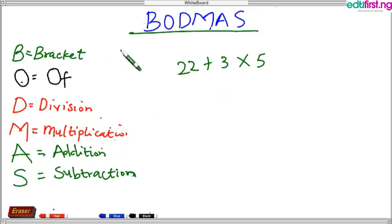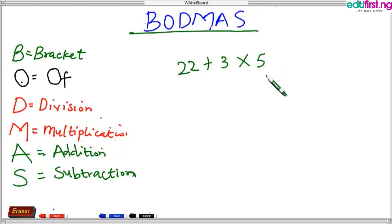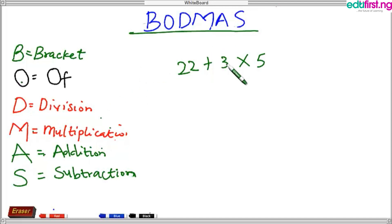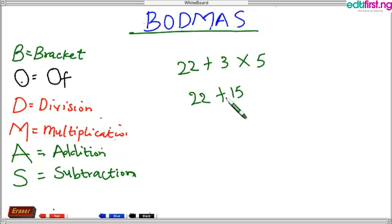How do we apply BODMAS? We have to look out — do we have brackets in this given question? If we do, that means we have to solve brackets first. Do we have brackets? The answer is no. We check for Of — no. Division — no. Multiplication — yes! Hence we have to tackle that.